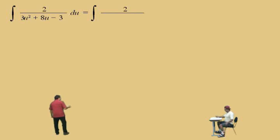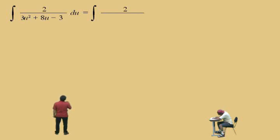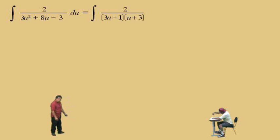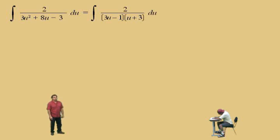So you should know it's factorable. You can use the guess or check method, whatever you want. But how does it factor, Charlie? 3u minus 1. That's right. u plus 3. u plus 3, very good.